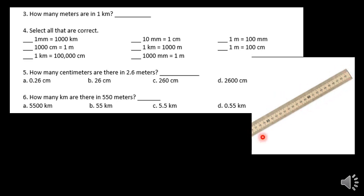You can use this same logic for other units. If I asked how many centigrams are in a gram, just think of the meter stick — how many centimeters are in a meter? There's 100. So same thing: there are 100 centigrams in a gram. How many grams in a kilogram? There are 1,000 meters in a kilometer, so same thing — 1,000 grams in a kilogram. How many milliliters in a centiliter? There are 10 millimeters in a centimeter, so there are 10 milliliters in a centiliter.